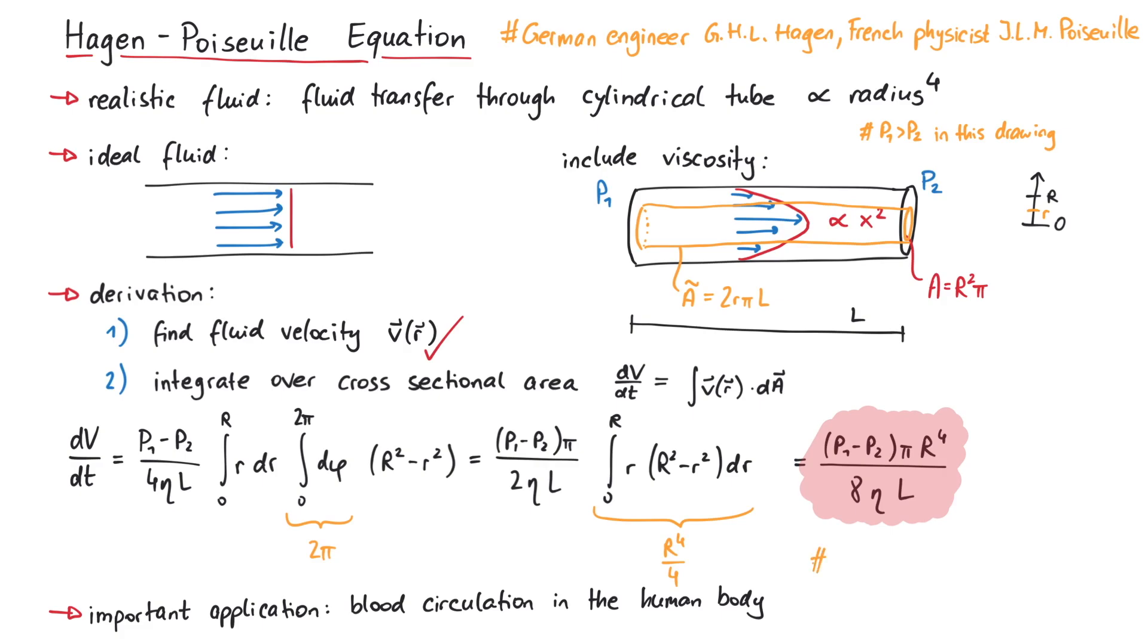As a final note, if we consider just an infinitesimal portion of the tube, we can replace the pressure difference divided by the tube length by a pressure gradient. But that's pretty much it for this video. Thanks for watching.